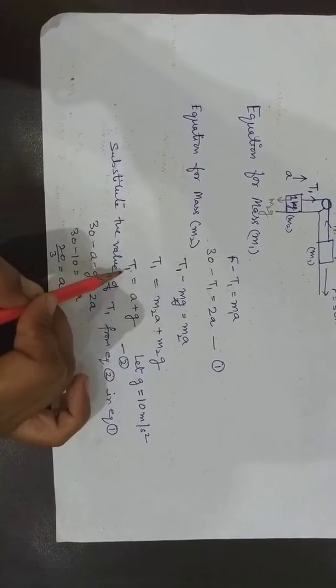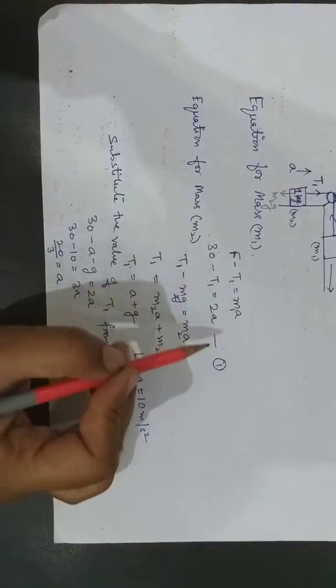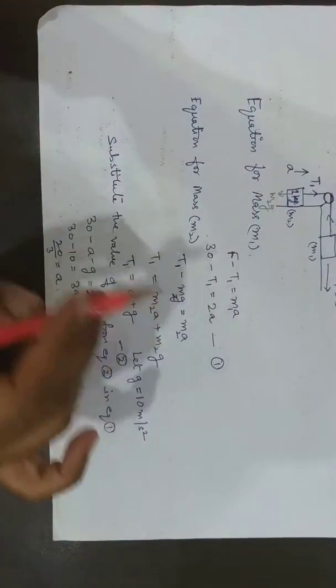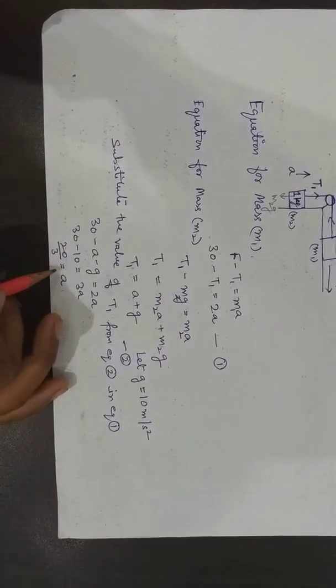I have substituted the value of T1 into equation number 1. After substituting the value of T1, I get a single equation in a single variable. Now I can solve this for A.